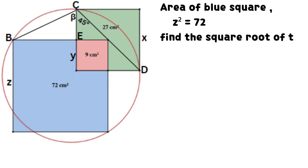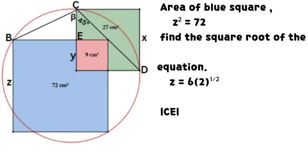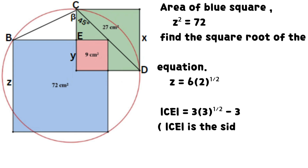Area of blue square: z² = 72. Find the square root of the equation so that z = 6√2.